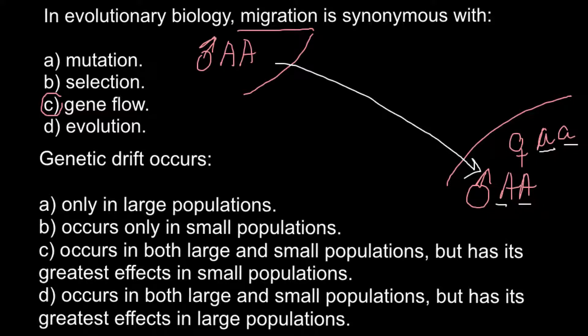Genetic drift occurs... and here are four answers. A: Only in large populations, B: Occurs only in small populations, C: Occurs in both large and small populations but has its greatest effect in small populations, and D: Occurs in both large and small populations but has its greatest effect in large populations. And here, the correct answer would be C.